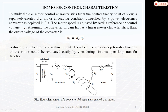Field control is applied when we require speed control above rated speed. The armature voltage Va is given by Va = Kc × Vr, where Kc is some gain from the converter and Vr is the reference voltage. First we determine the open-loop transfer function, from which we can find the closed-loop transfer function and then design the PI controller to achieve certain performance requirements.